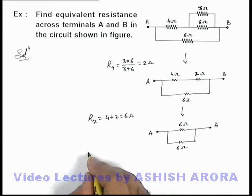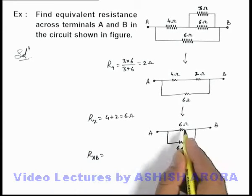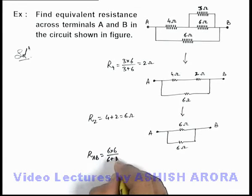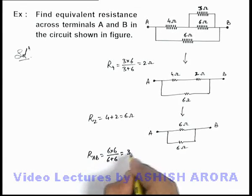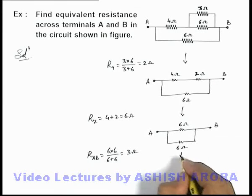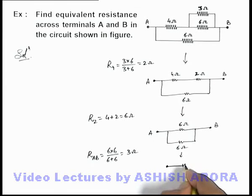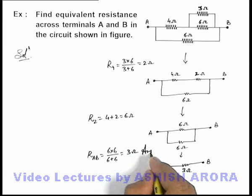So here we can say the final group equivalent resistance for the combination across terminals A and B is 3 ohms. That is the answer to this problem.